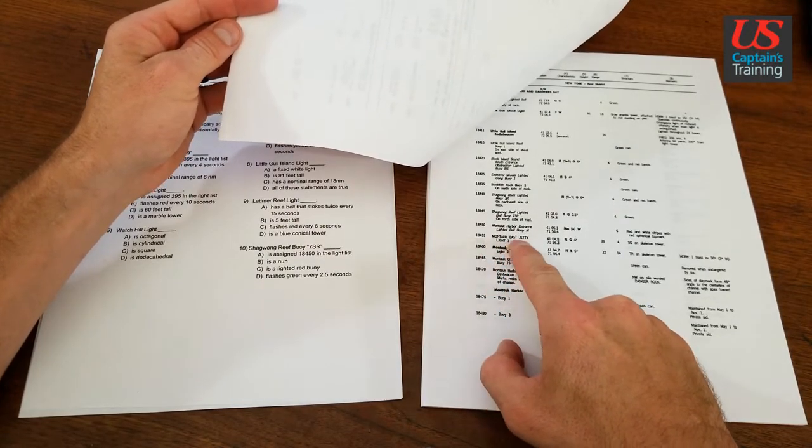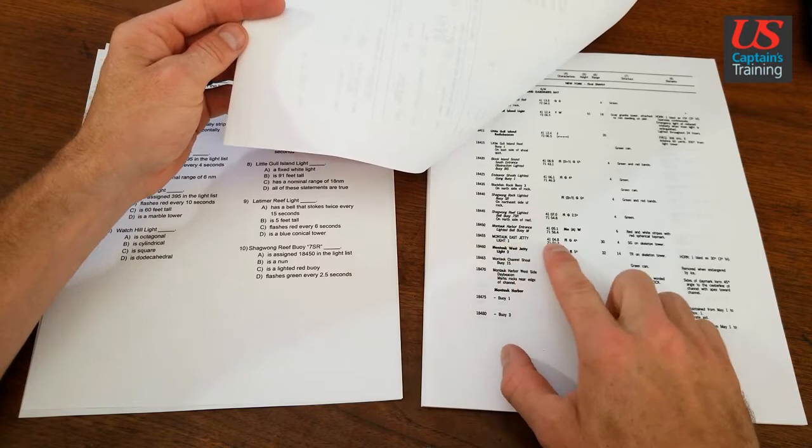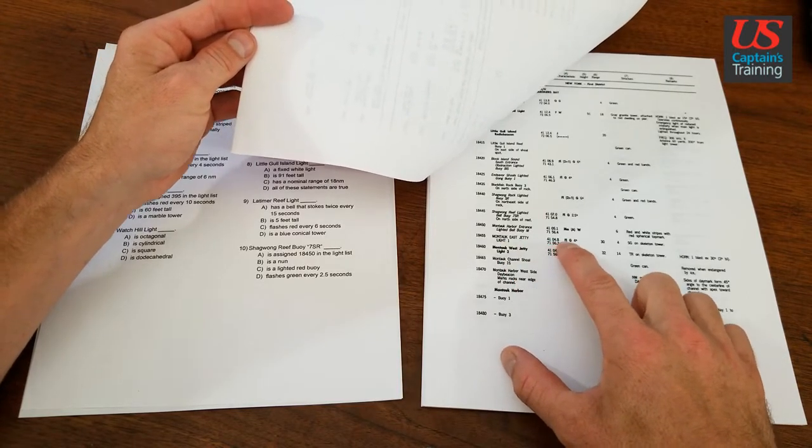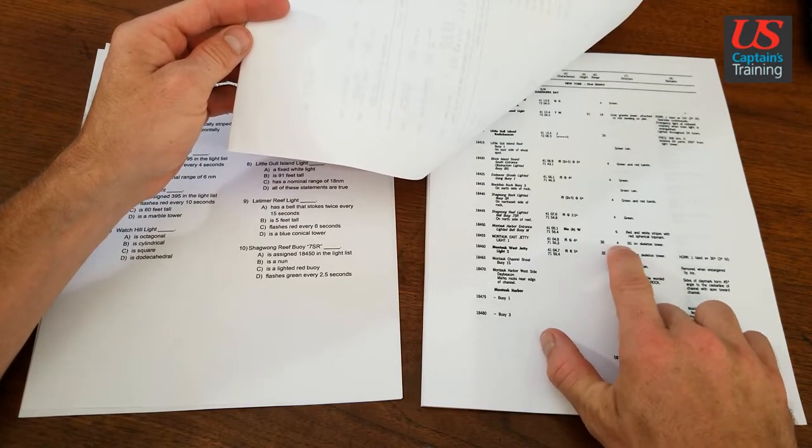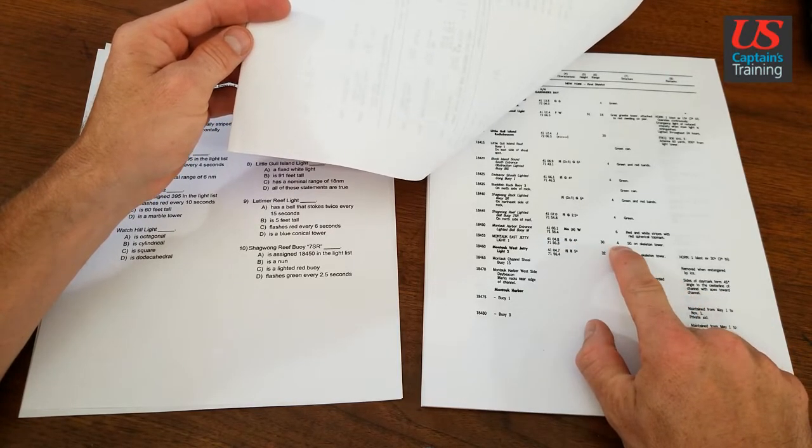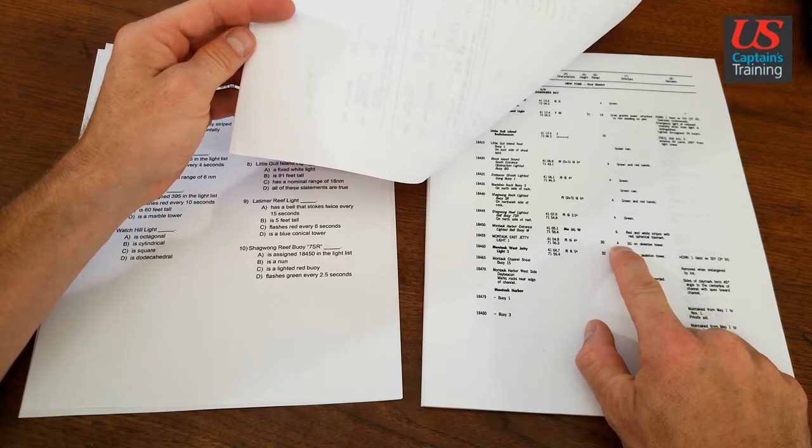Here's the coordinates. Flashes green every four seconds, 30 feet tall. You can see it from four miles on a day with visibility of 10.